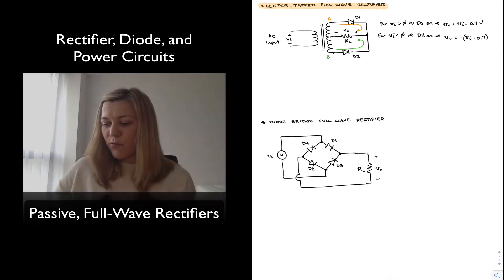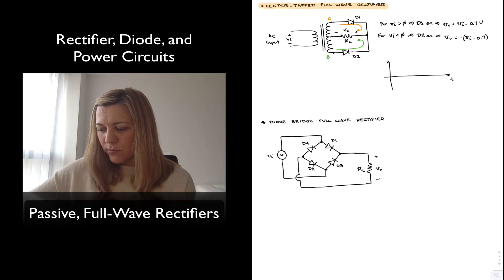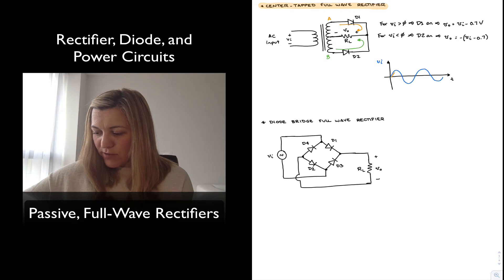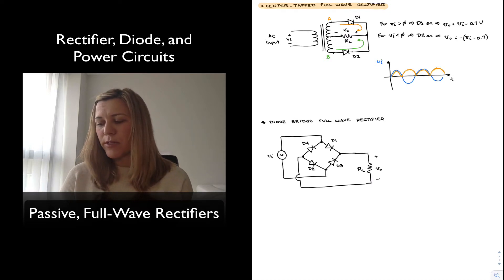If we want to plot the time domain plot for the input and output signals, if this is my input signal v_in, then I will have that my output will follow the input signal in the positive half cycle except for a diode drop, and then basically give me the absolute value of the input signal. This is my v_out. I can also write v_out is equal to absolute value of v_in for all values of v_in.